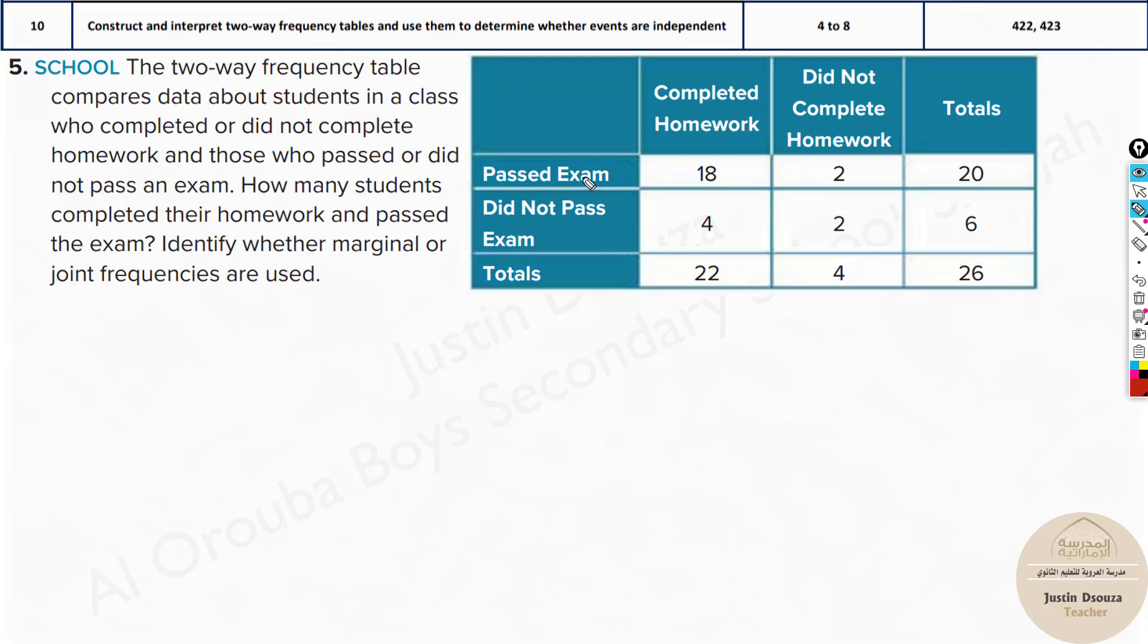How many students completed their homework and passed the exam? Identify whether the marginal or joint frequencies are used. Marginal and joint frequency in simple understanding: marginal is the margins, the corner or most ones, whereas joint is the inside one, the common ones. These four blocks are joint, whereas the totals are the marginal ones.